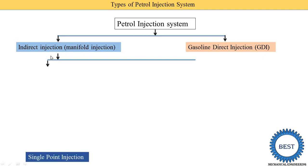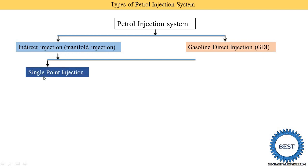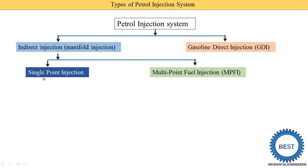Indirect injection is further classified into two categories: the first is single point injection and the second is multi-point fuel injection. For a four-cylinder engine, there are two possibilities — petrol is injected at only one point, or it can be injected using a multi-point fuel injection system.